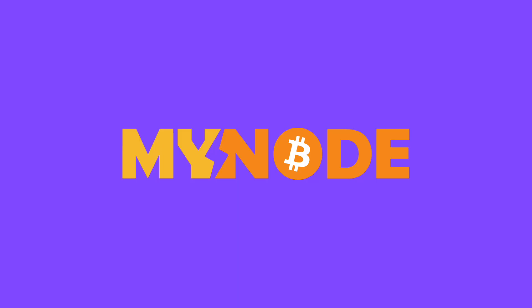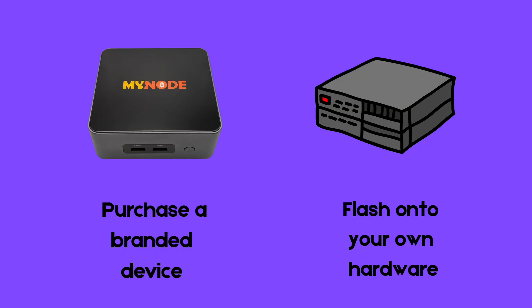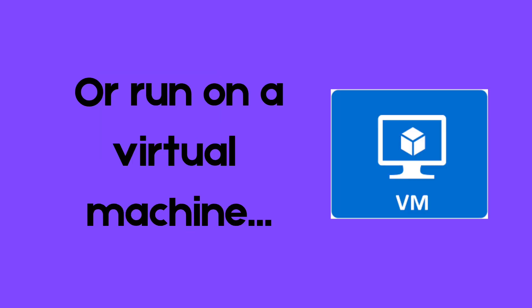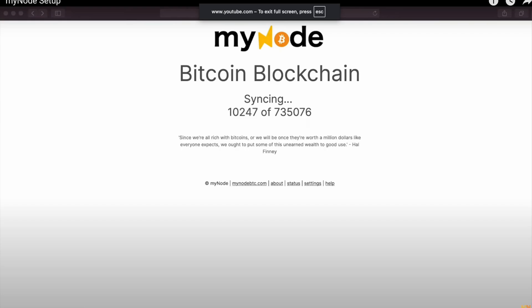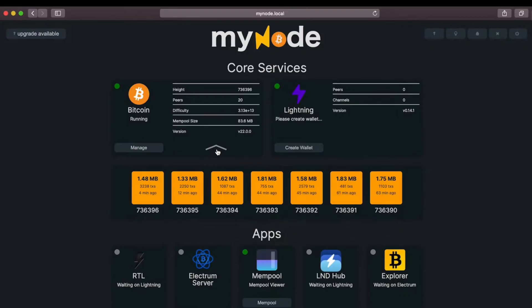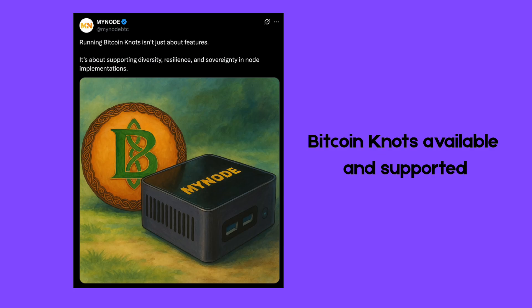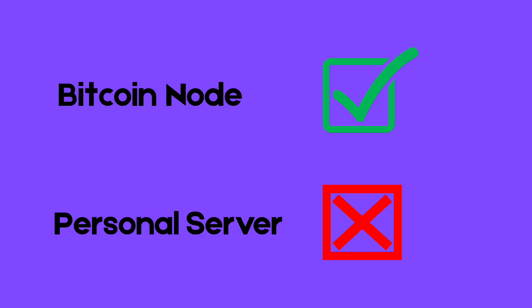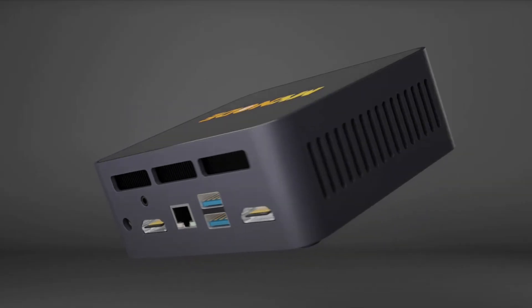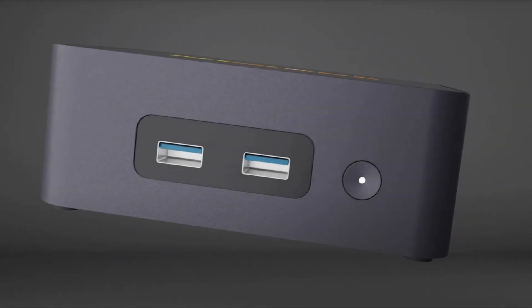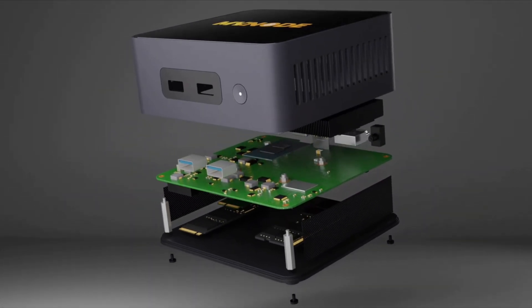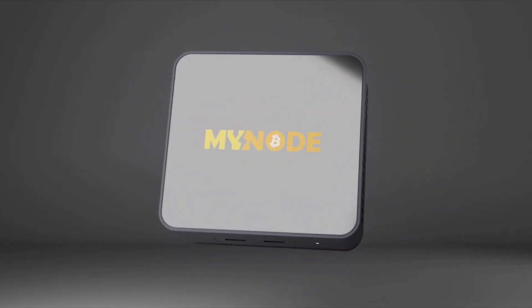myNode is a Bitcoin and Lightning node operating system that you can flash onto your own hardware or buy pre-installed. It runs Bitcoin Core by default and starts syncing the blockchain automatically when it boots up. The interface is simple, browser-based, and runs over Tor for privacy. It offers a small set of Bitcoin-only apps — no fluff, no personal server tools. myNode is ideal if you want a straightforward, Bitcoin-focused setup without using the command line, but still want some customization and control.